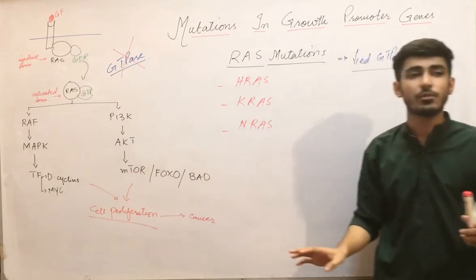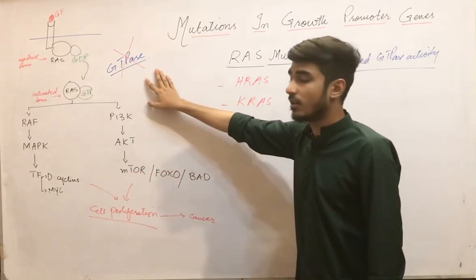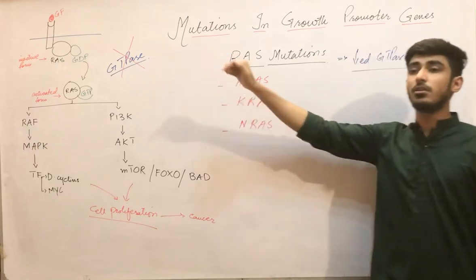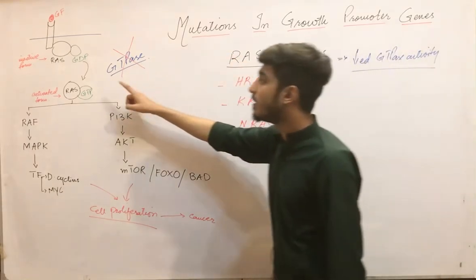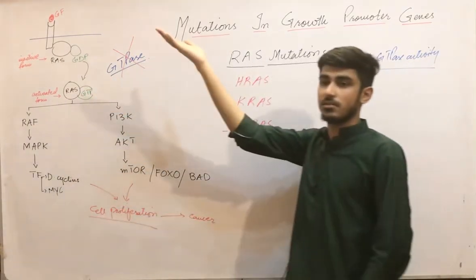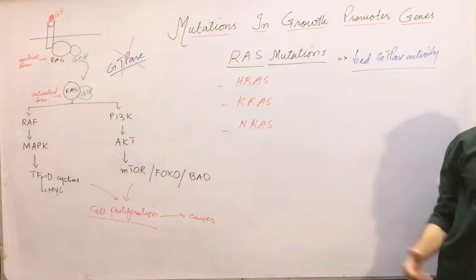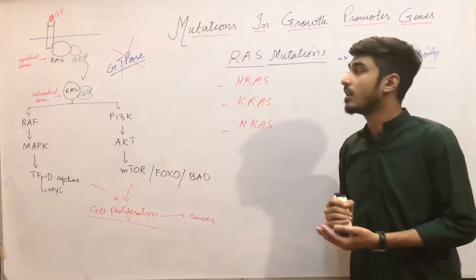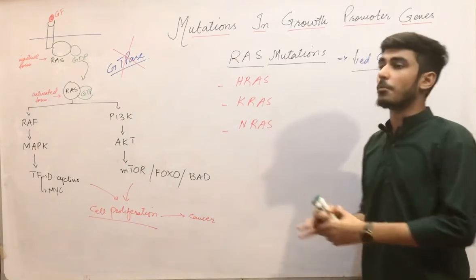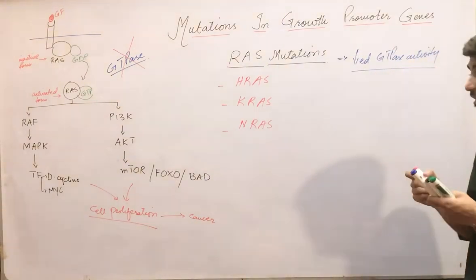This is the whole mechanism of how RAS mutations occur. There is a loss-of-function mutation in the GTPase activity, which results in a gain-of-function mutation in the RAS. Since GTPase was a negative regulator, losing its activity increases RAS activity — a gain-of-function mutation in the RAS genes.